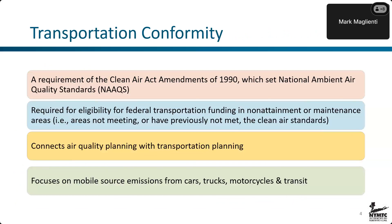Transportation conformity comes from the Clean Air Act Amendments of 1990, which set National Ambient Air Quality Standards — standards for certain criteria pollutants found in the open air. The process is required to be eligible for federal transportation funding and to gain approval for areas that are either non-attainment or maintenance areas — areas not currently meeting or that have previously not met those air quality standards. This process connects air quality planning with transportation planning, and because it's transportation conformity, it's focused on mobile source emissions from cars, trucks, motorcycles, and transit.